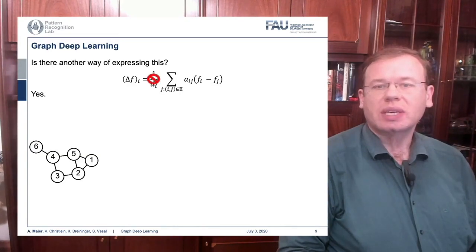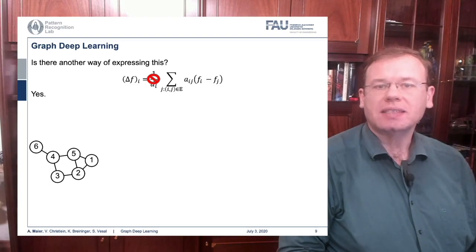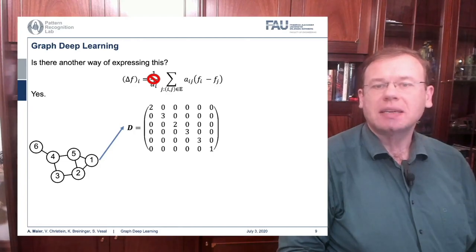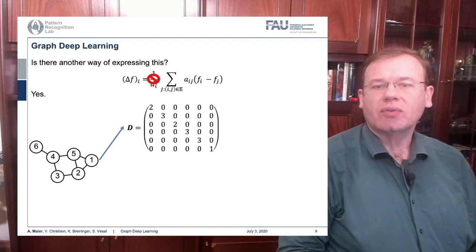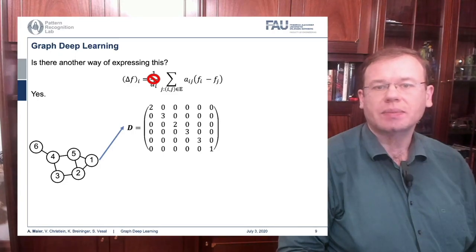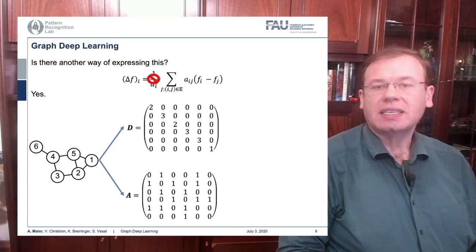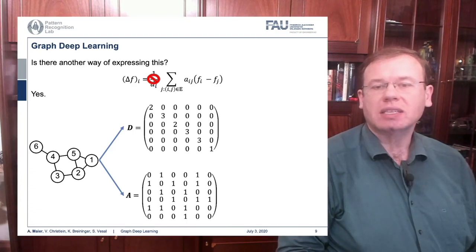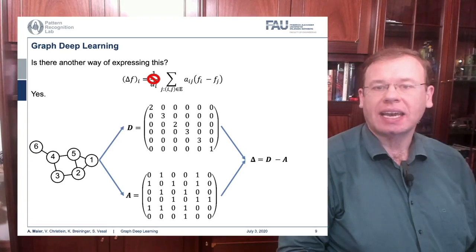This is then the difference of our center node f_i minus f_j, divided by the number of incoming connections into f_i, given as d_i. We can also express this using an example graph with nodes 1, 2, 3, 4, 5, and 6. We compute the Laplacian matrix using matrix D, which is simply the number of incoming connections per node: node 1 has 2, node 2 has 3, node 3 has 2, node 4 has 3, node 5 has 3, and node 6 has only 1.